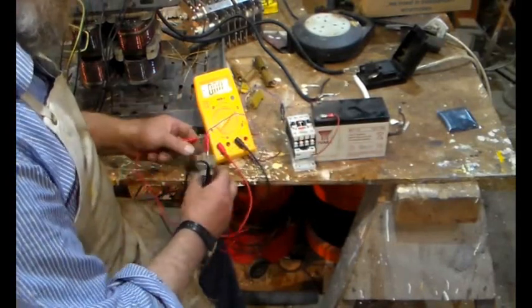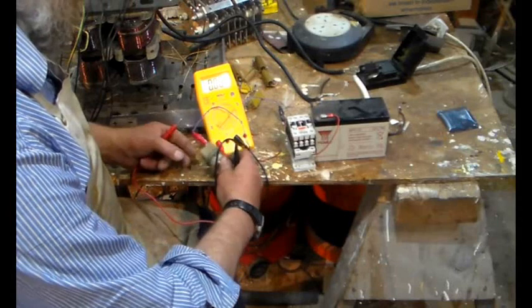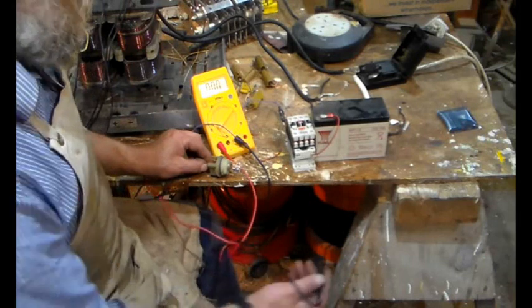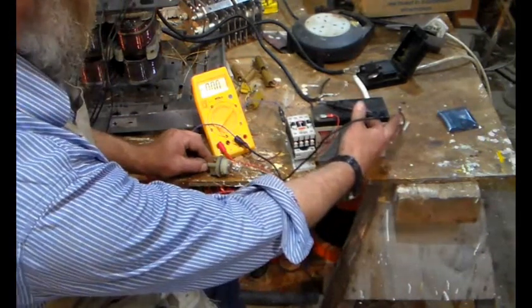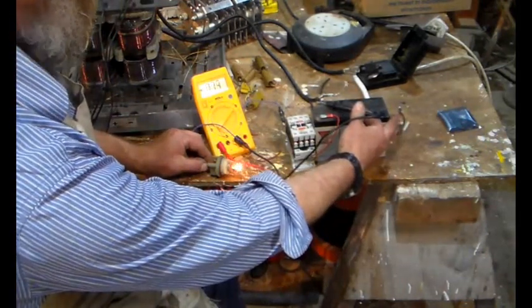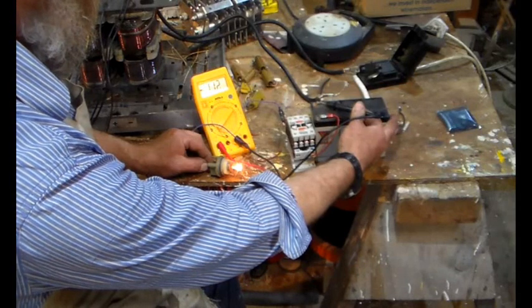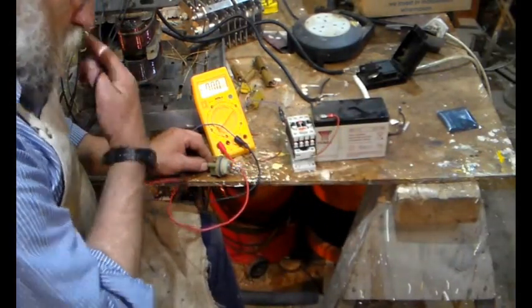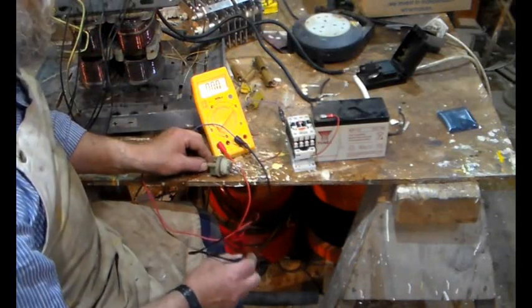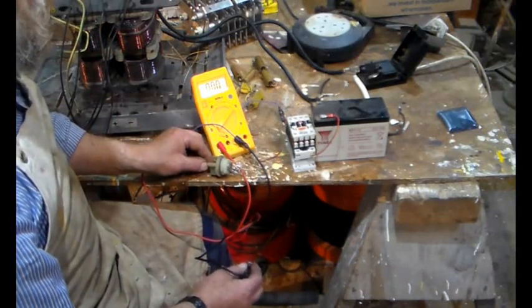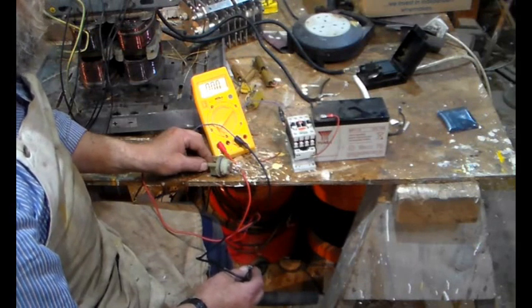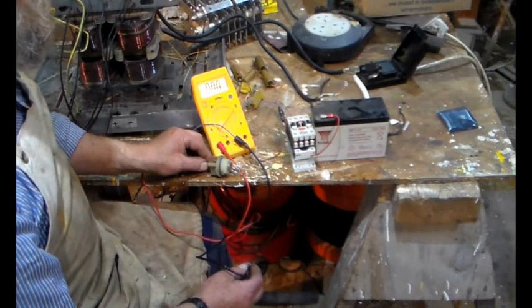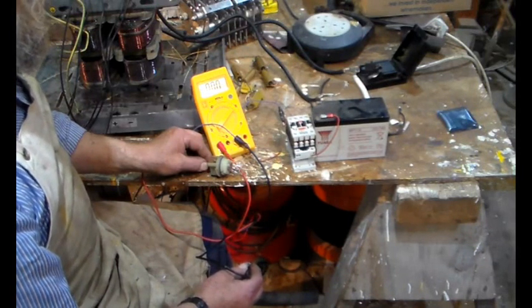Each one of those contacts in there, and there are four of them, should handle 30 amps. Let's just move this round, turn it upside down, put it like that. Hopefully you can see all that lot. There you go.